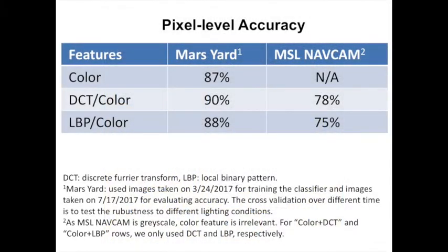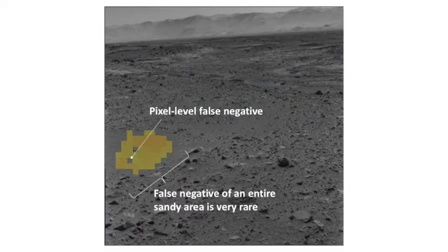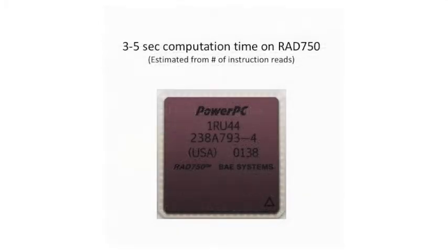The pixel-wise accuracy measured by cross-validation is 90% in the Mars yard and 78% on the nav cam dataset from MSL. However, despite pixel-level false positives and false negatives, the likelihood of misidentifying a sandy area the size of the rover is very small. The estimated running time on a RAD 750 per one nav cam image is 3 to 5 seconds.